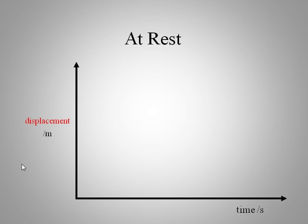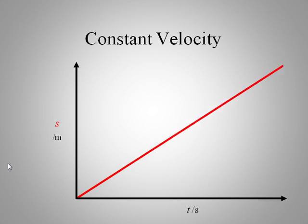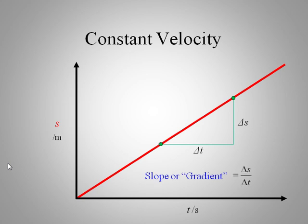How do you show an object at rest on a displacement-time graph? It's just a horizontal line — it can be anywhere. Constant velocity looks like a diagonal line. If you pick two points and make a triangle, you get the change in displacement over change in time. That ratio is the slope of the line, which represents velocity. So the slope or gradient of a displacement-time graph is velocity.